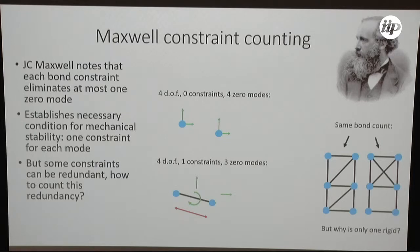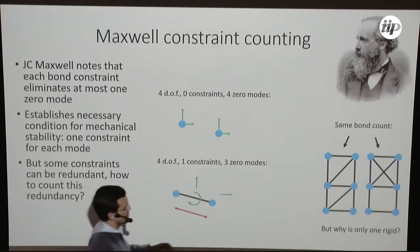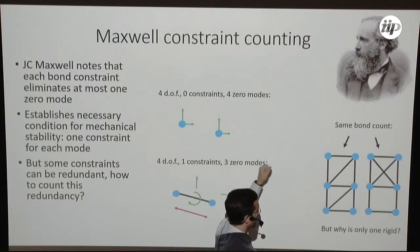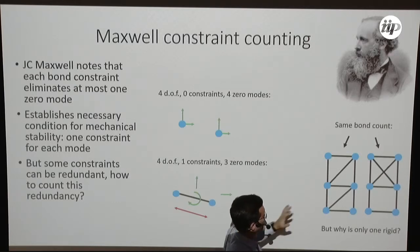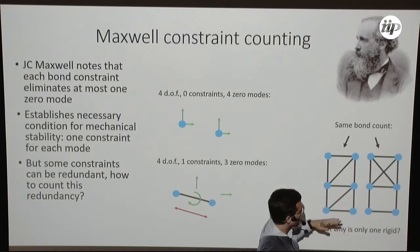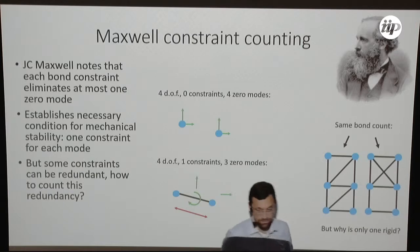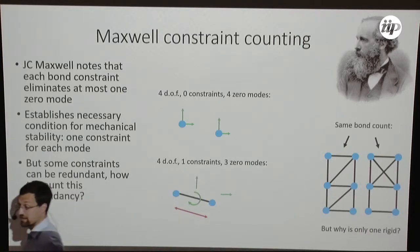Maxwell was aware that this counting argument didn't tell you everything. He knew that you could have a structure like this, which is rigid, so there's no cost to changing the angle between bonds, only changing the distance of the bonds. But this structure, which has the same number of bonds, is not rigid. We can shear the bottom square. But he didn't have a mathematical explanation for when that redundancy did and didn't occur.